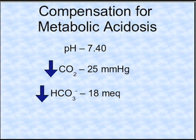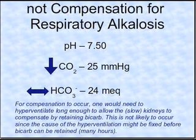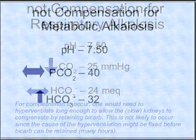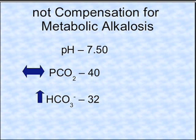Think of the balance between carbon dioxide and bicarb — bicarb goes down, which is not enough base, so CO2 acid must be taken away. Now, what about compensation for alkaloses? A hyperventilating patient is not likely to compensate, because the source of the hyperventilation would probably be fixed before the kidneys had the time to compensate. So there is generally not compensation for respiratory alkalosis.